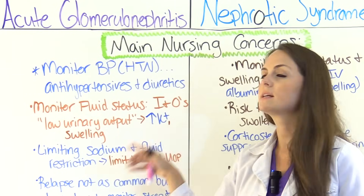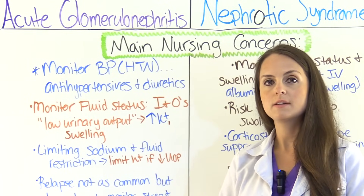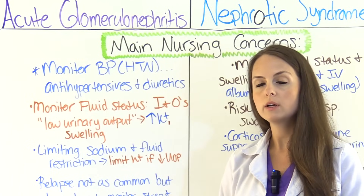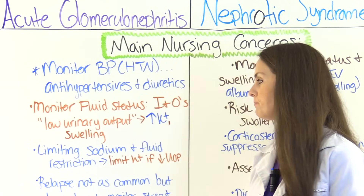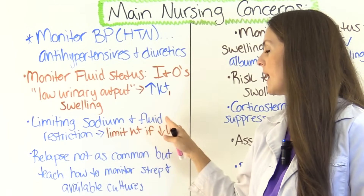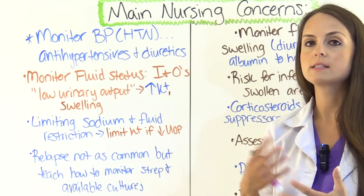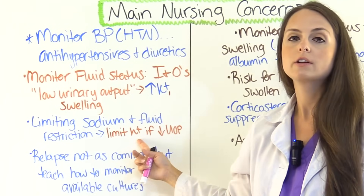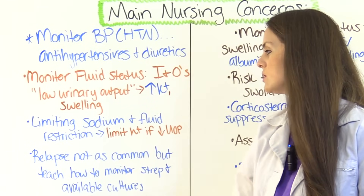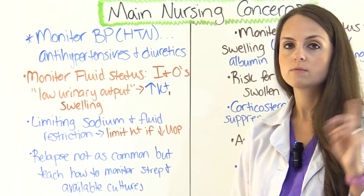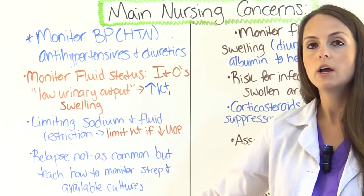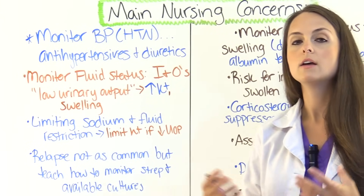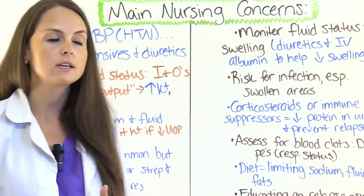Monitor the potassium level because the body is not excreting it and it can lead to hyperkalemia. Also assess their swelling — is it decreasing or getting worse? With this condition, we're really worried about renal function. Limit sodium and follow a fluid restriction diet because of all the swelling. If the patient has low urinary output, limit consumption of foods high in potassium. Relapse is not as common as with nephrotic syndrome, but teach the patient to monitor for future strep infections and to get a simple culture at the physician's office.